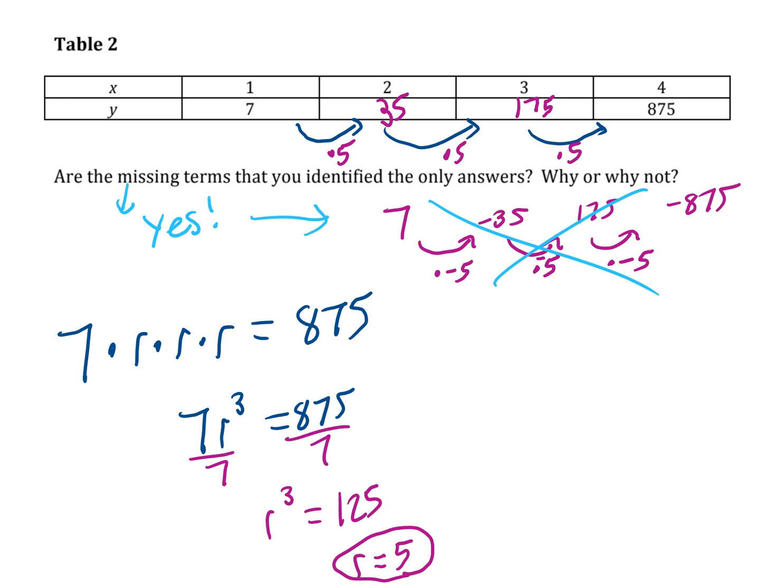So the negative version of the common ratio will work in situations where you're multiplying an even number of times to get from the given term to the final term. But it won't work in situations where you're multiplying an odd number of times. So in this case, R equals 5, as we showed down here, is the only possibility. And that allows us to fill in the table with these two values, which are the only possibilities.